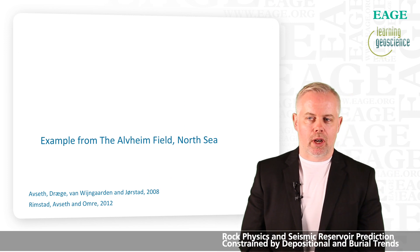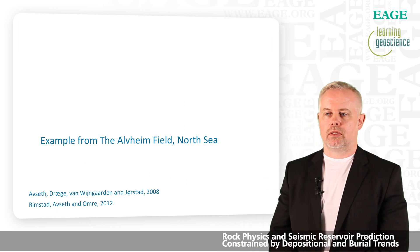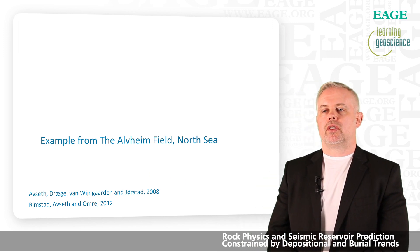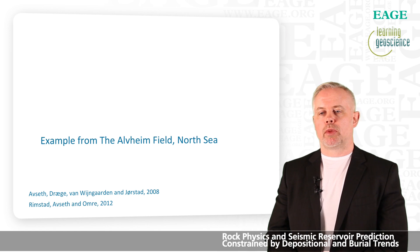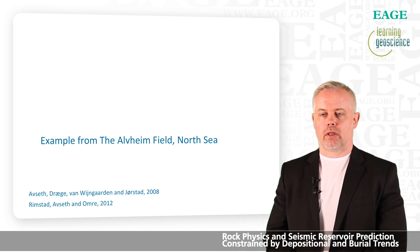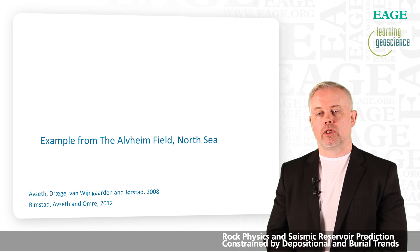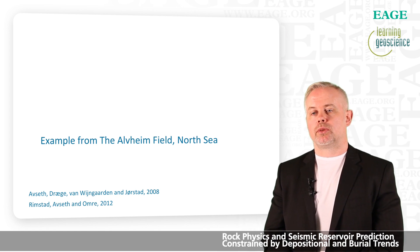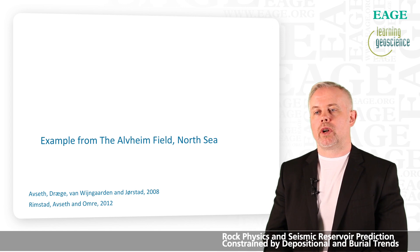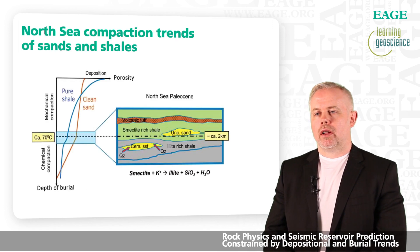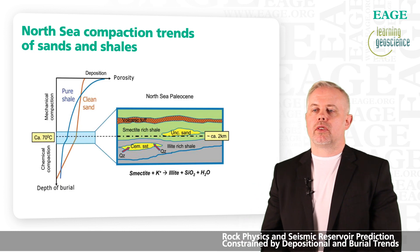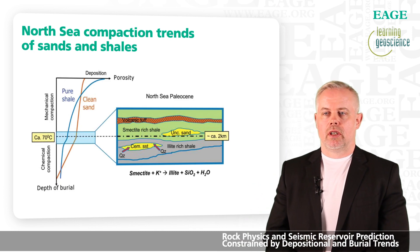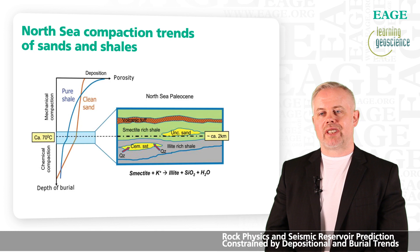Let's start with an example from the Alfheim field in the North Sea. This example has been published in a paper by Avsett, Dräge, van Windgarten, and Jörstad in 2008 in The Leading Edge, and also in a paper by Kjartan Remstad et al. in 2012. This figure shows compactional trends of sands and shales.